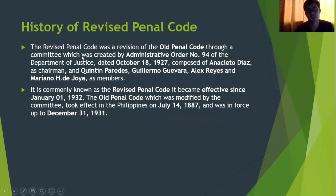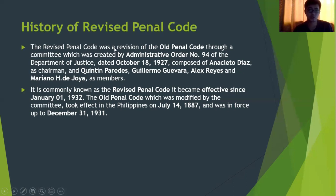Regarding the history of the Revised Penal Code: the Revised Penal Code was a revision of the old Penal Code, which became effective in the Philippines on July 14, 1887, and was enforced until December 31, 1931. The revision was done through a committee created by Administrative Order No. 94 of the Department of Justice, with Anacleto Diaz as chairman, and members including Quintin Paredes, Guillermo Guevara, Alex Reyes, and Mariano Lim.